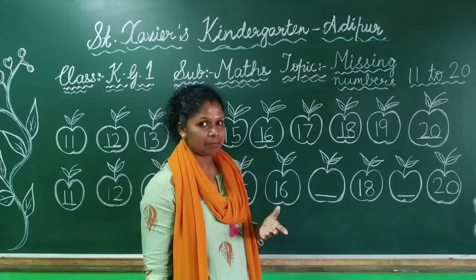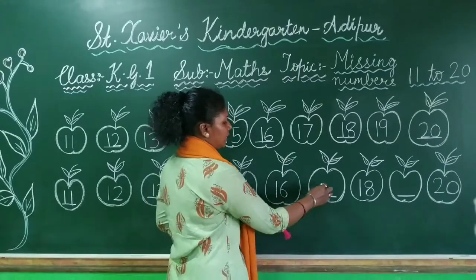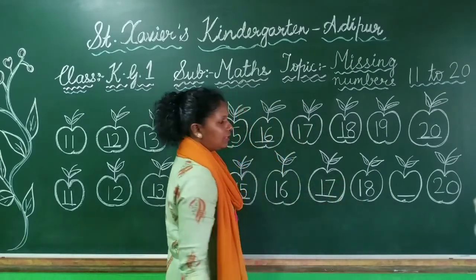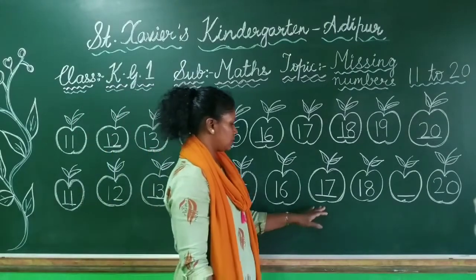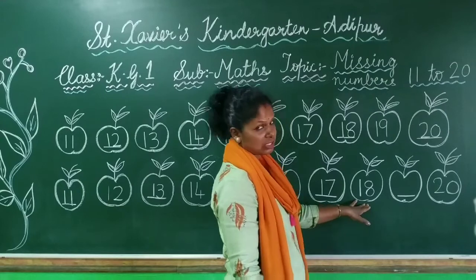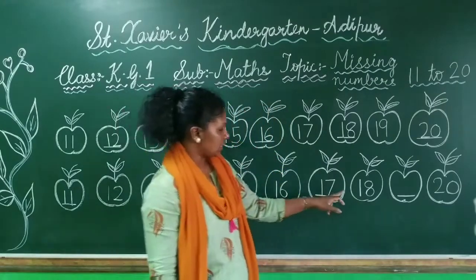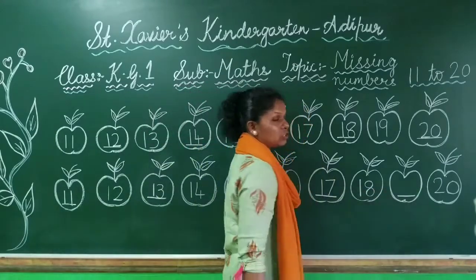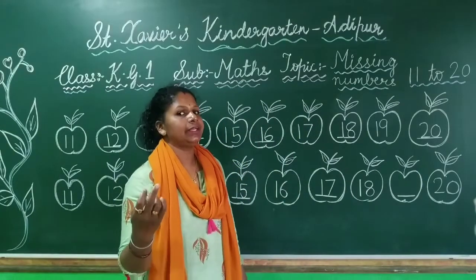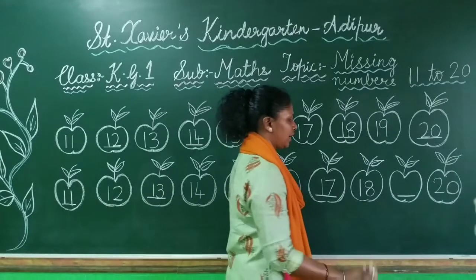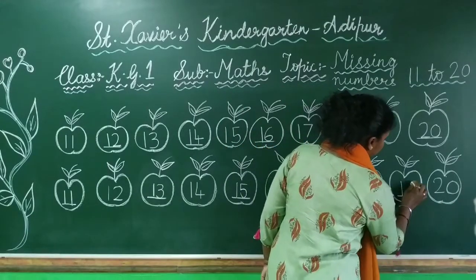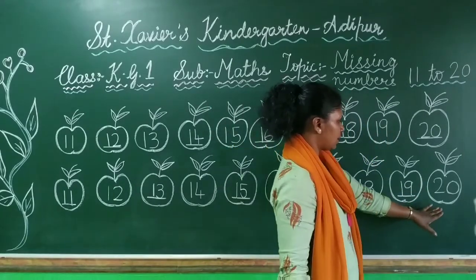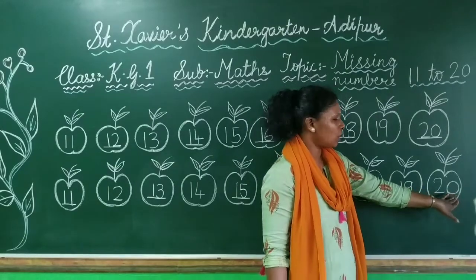After 16, which number will come? Yes, 1, 7 — 17. Correct. So we will write here: 1, 7 — 17. Right. Now after 17, which number will come? Yes, 1, 8 — 18. 1, 8 — 18. Correct. Now after 18, which number will come? 1, 9 — 19. Correct. 1, 9 — 19. Okay? And after 19, which number? 2, 0 — 20.